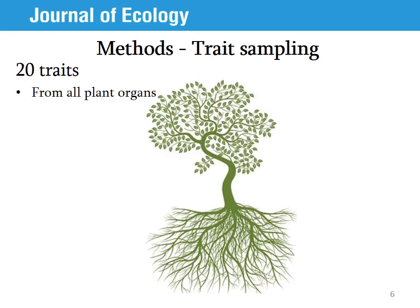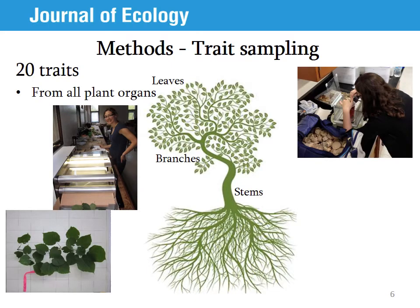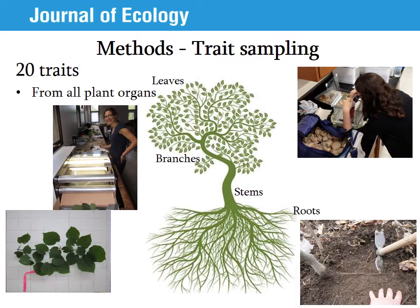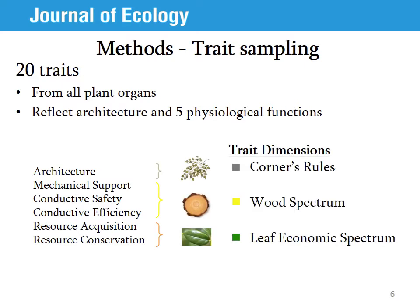On each tree, we measured 20 traits from all plant organs: leaves, branches, stems, and roots. Those 20 traits reflect architecture and five physiological functions: mechanical support, conductive safety, conductive efficiency, resource acquisition, and resource conservation. These functions make up the three trait dimensions introduced earlier.